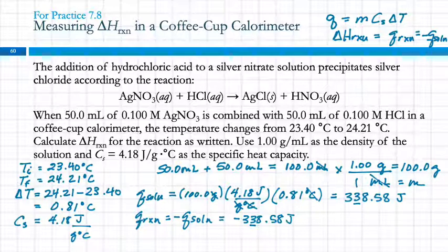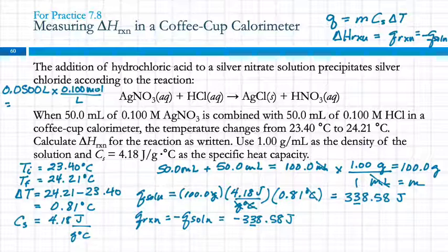So I need to figure out how many moles of stuff I had here. So I've got 0.0500 liters, which is converting milliliters to liters, times 0.100 moles per liter. And so that's 0.00500 moles of silver nitrate. I've got the same volume, the same concentration of the other reactant. So that's also 0.00500 moles. So I could look at either one of these. It's going to be the same because they are the same. I don't have a limiting reactant here, and we're not going to do that to you. This is hairy enough.